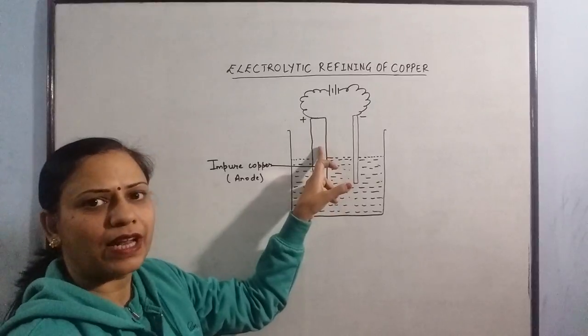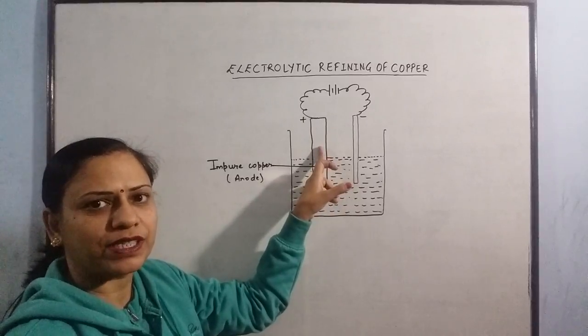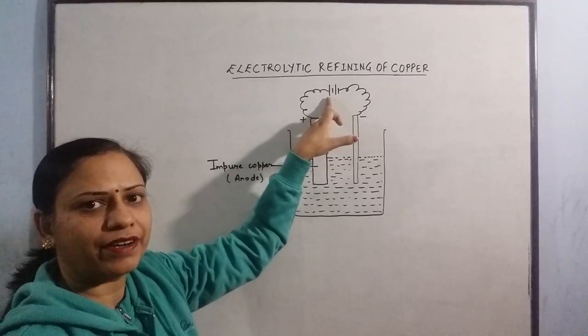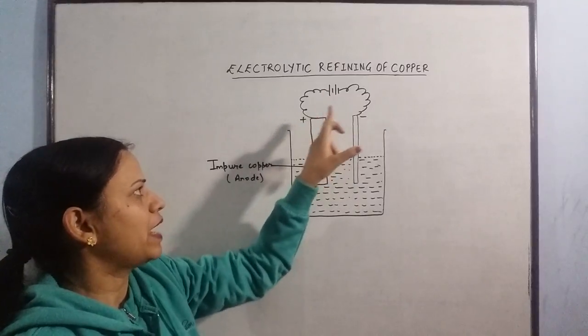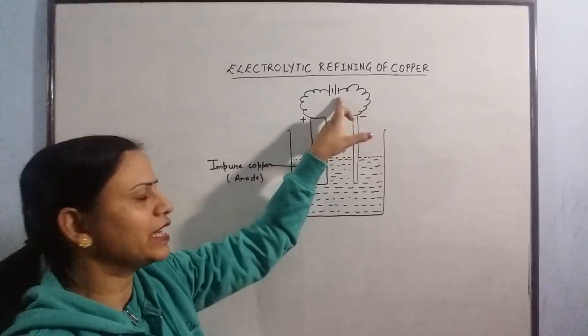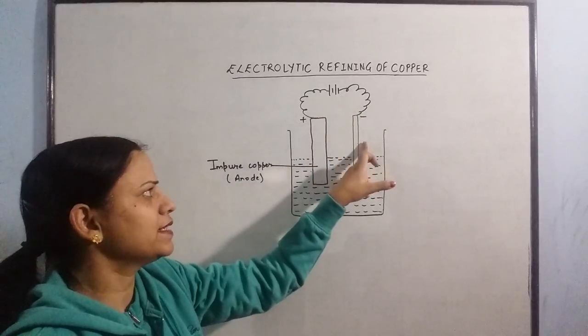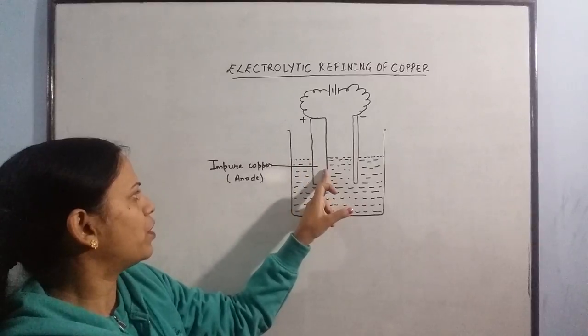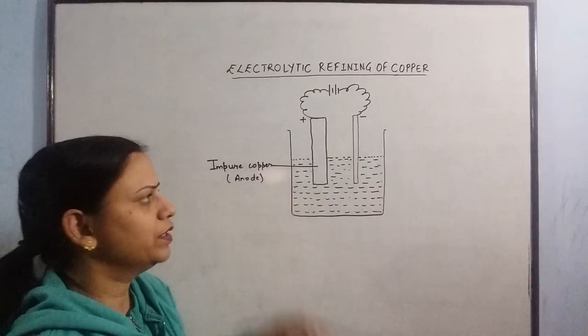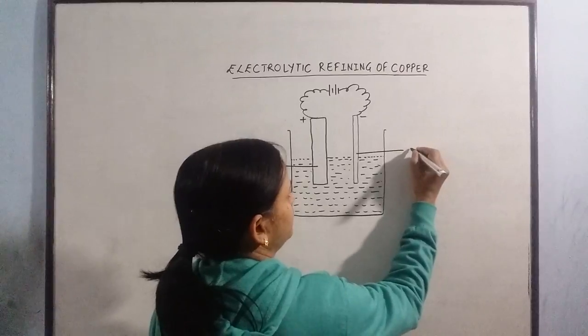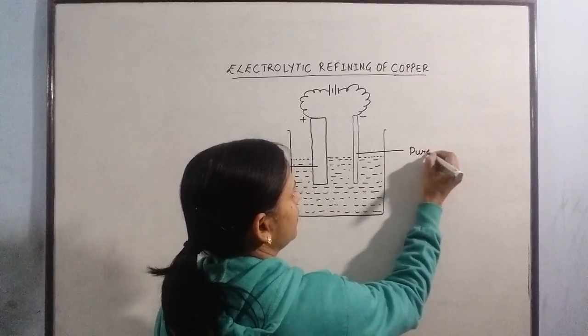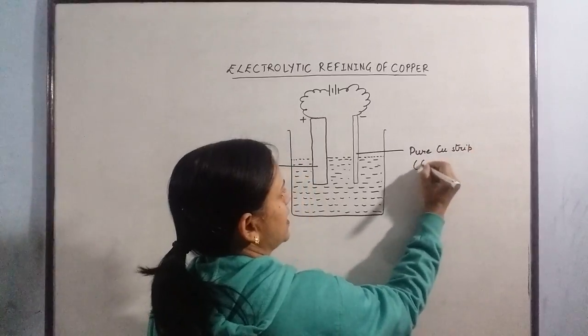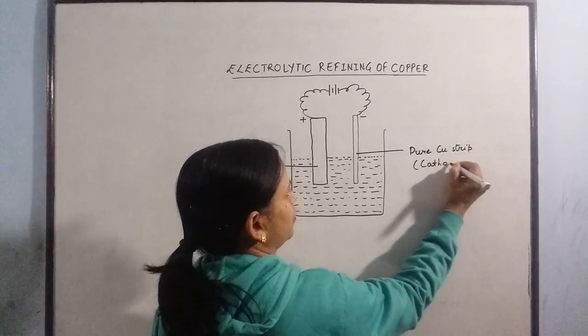How do we come to know which electrode is to be taken as positive? The electrode which is connected to the positive terminal of the battery is marked as positive and the electrode which is connected to the negative terminal of the battery is marked as cathode or the negative electrode. So the impure copper rod acts as the anode and this is a thin strip of pure copper which acts as the cathode.